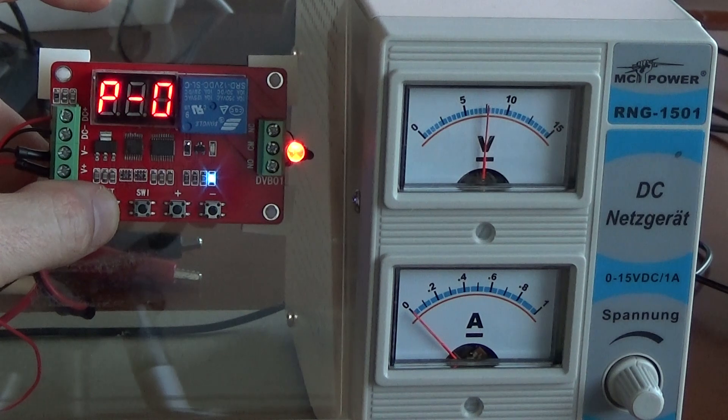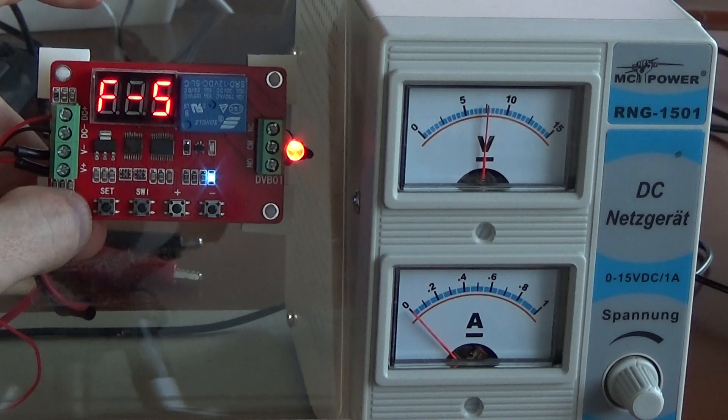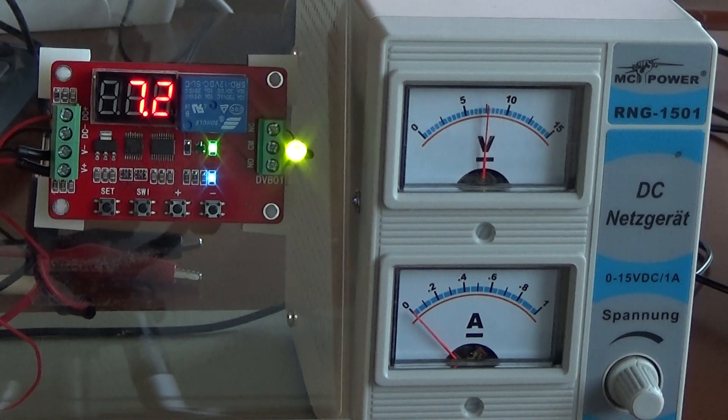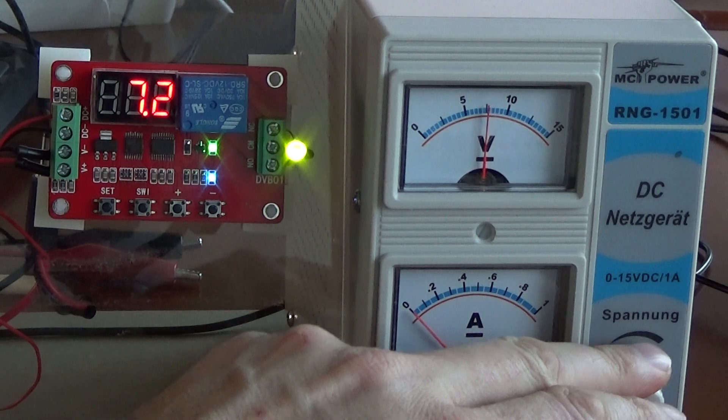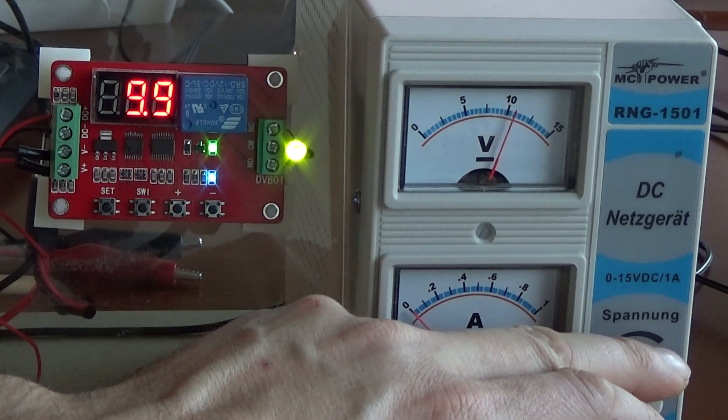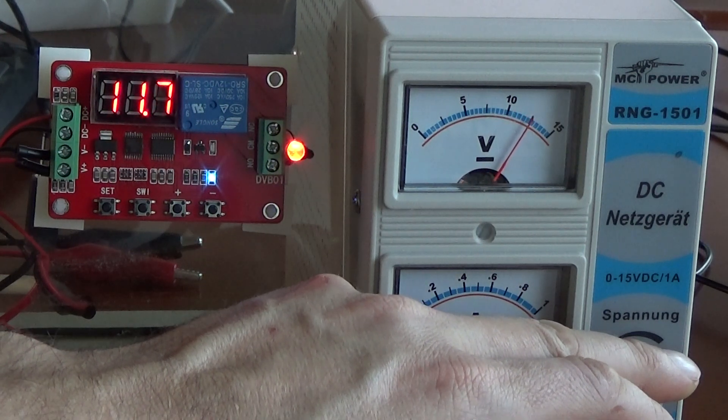Now let's just for fun take the last function, number five. Of course that is just the opposite of function number four. So I adjust it to 10 volts and the relay will become inactive. And more than 12 volts, it will become active again.